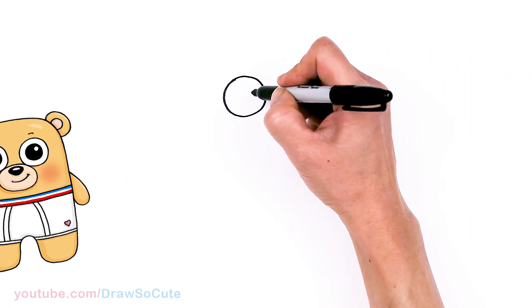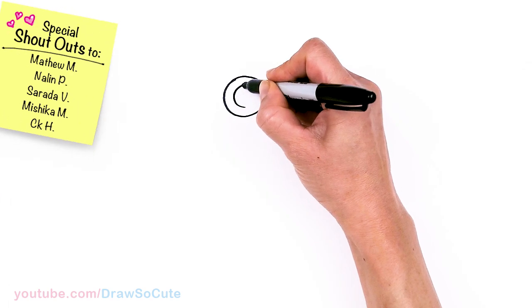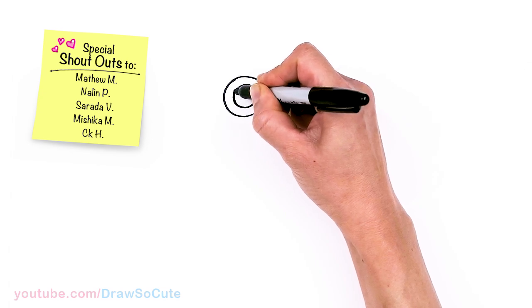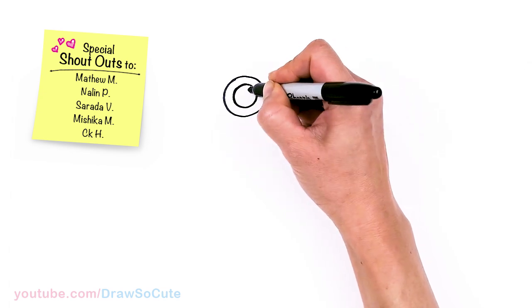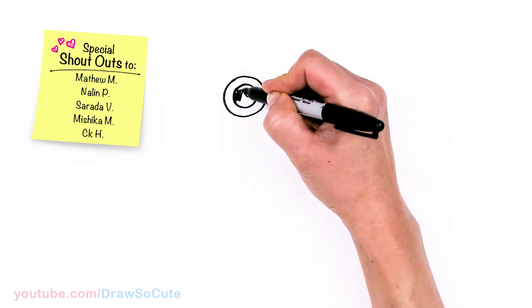So two huge circles and we're going to come back inside and we're going to draw another circle inside. Right in the center. And I'm going to come right here and give it a little highlight and shade everything else in.